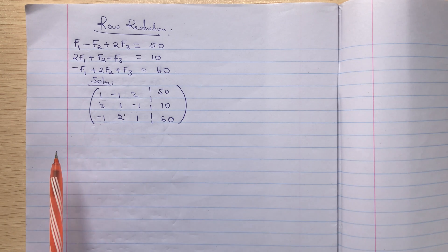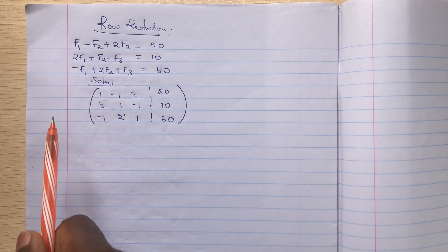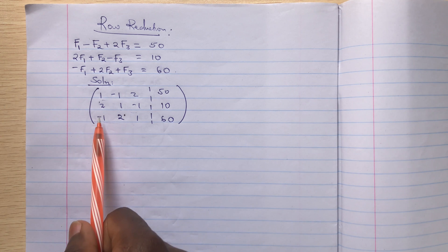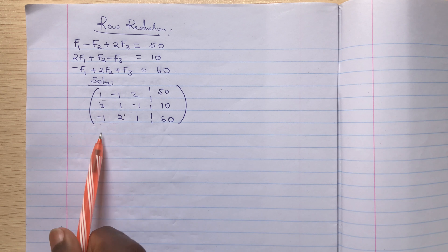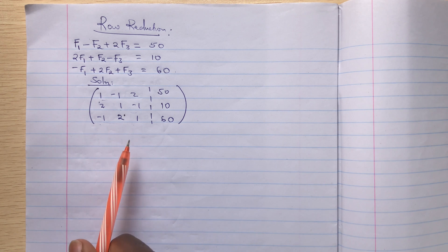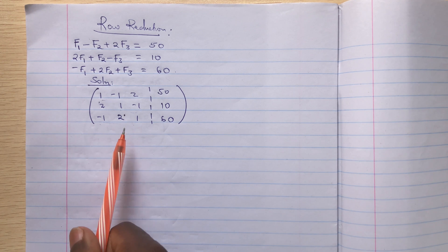So row reduction, for those of you who don't know, is about creating or eliminating a lot of unknowns so that you remain with few of them for easy calculation or solving.